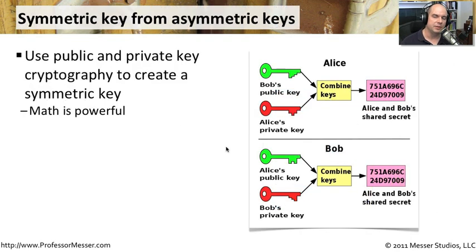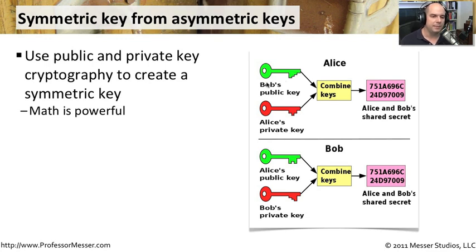The relationship between public keys and private keys also allows us to do interesting things with math that lets us build symmetric keys — ones that can be created automatically behind the scenes without sending the symmetric keys across the network. Alice has access to her private key; she grabs Bob's public key, combines them together, and creates — through an algorithm — a shared secret key. This symmetric key can then be used by Alice to encrypt information and send it to Bob.